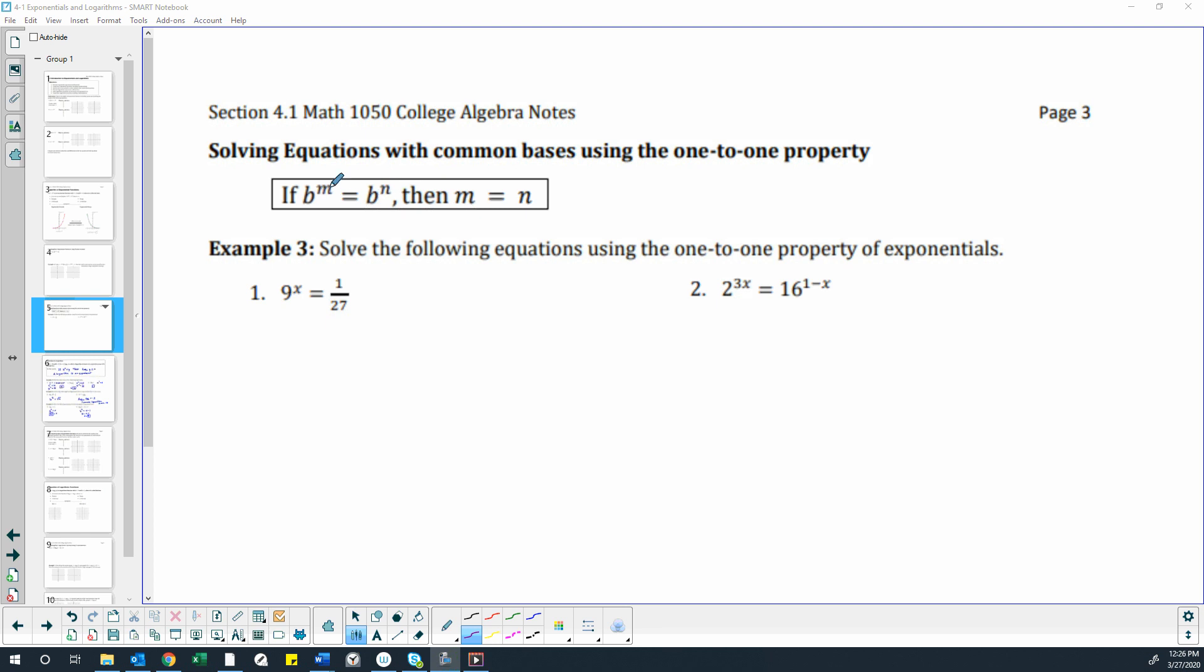If the bases are equal, then the exponents have to be equal, even if the exponentials aren't there. So in the following examples, we can use this property by getting the same base on each side and then setting the exponents equal to each other.